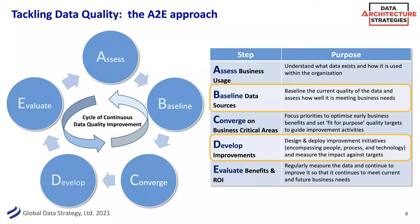We've worked with a couple of organizations recently where their biggest problem, ironically, was that they were doing too much data quality. They were scanning all their data sources, had a lot of profiling, and had some of the fanciest tools in the market — but they were missing the 'so what.' Where were they going to focus? How did these data quality problems cause a business impact? Data quality is one of the best ways to kick off data governance, because people can relate to it — they can see that the numbers in a report are wrong or there are operational issues.